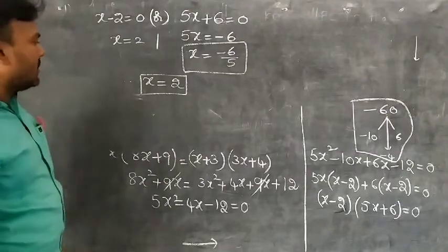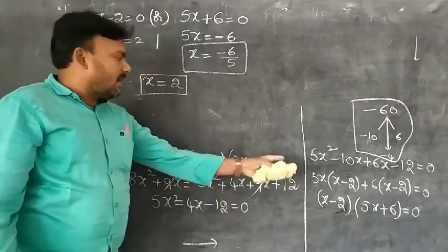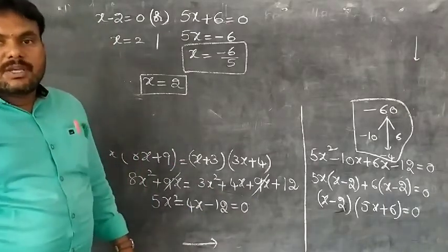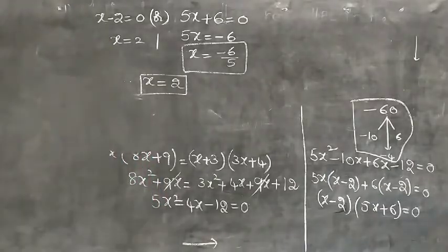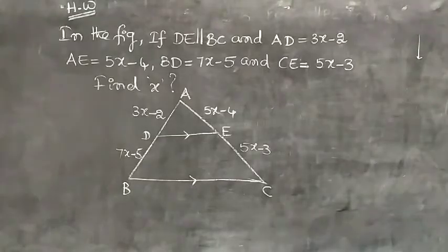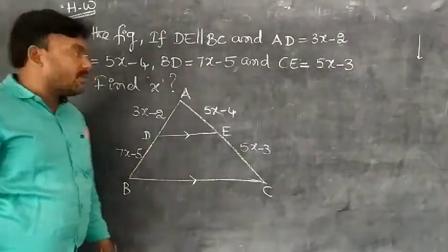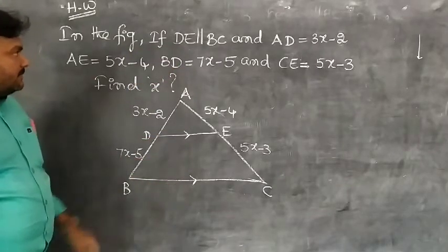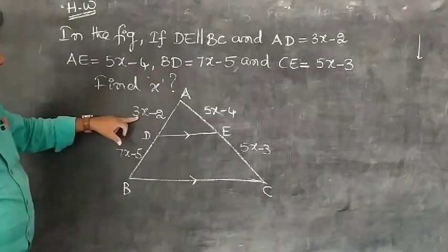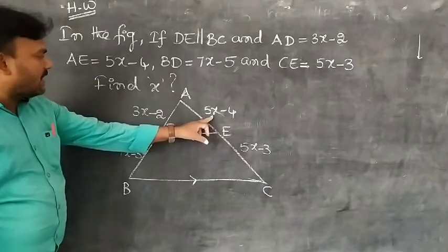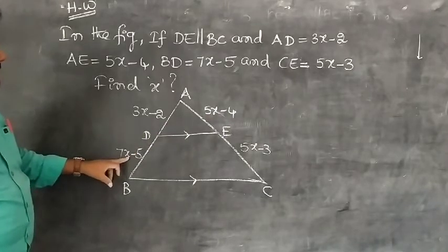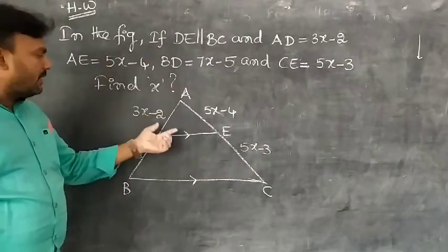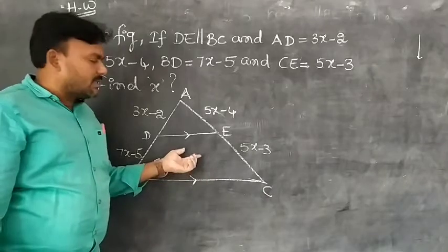So by using the BPT theorem, we arrived at the solution X = 2. Now I am giving one homework problem — practice it at your house carefully. In the figure, if DE is parallel to BC, and AD = 3X − 2, AB = 5X − 4, BP = 7X − 5, CE = 5X − 3, then find the value of X using the BPT theorem.